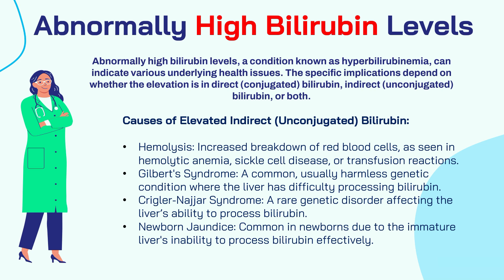The causes of elevated indirect or unconjugated bilirubin include four main reasons: first, hemolysis — increased breakdown of red blood cells, as seen in hemolytic anemia, sickle cell disease, or blood transfusion reactions; second, Gilbert's syndrome — a common but usually harmless genetic condition where the liver has difficulty processing bilirubin; third, Crigler-Najjar syndrome — a rare genetic disorder affecting the liver's ability to process bilirubin; and fourth, newborn jaundice — common in newborns due to the immature liver's inability to process bilirubin effectively.